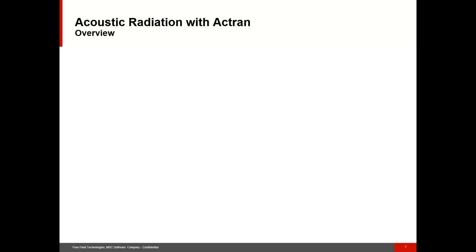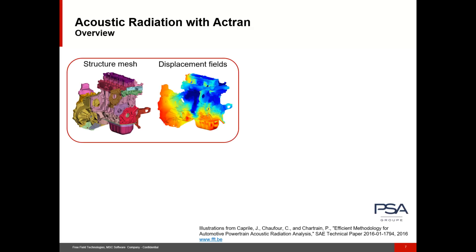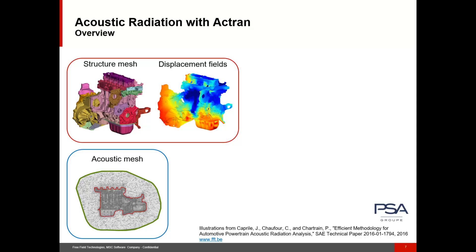Let's take the example of a car engine. In order to compute the noise created by the engine vibrations, you will need two ingredients. First, you will need the structure vibrations — these can be computed with another software such as MSC Nastran, computed with Actron, or measured with accelerometers. The second ingredient is an acoustic mesh, which consists of a coupling surface surrounding the structure, shown in red. Then we need a volume mesh around this coupling surface, and finally an exterior surface to support a non-reflective boundary condition, shown in green.